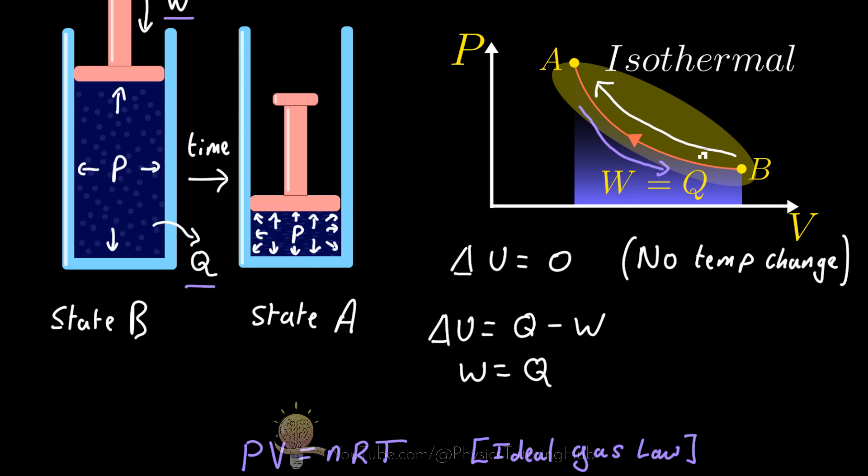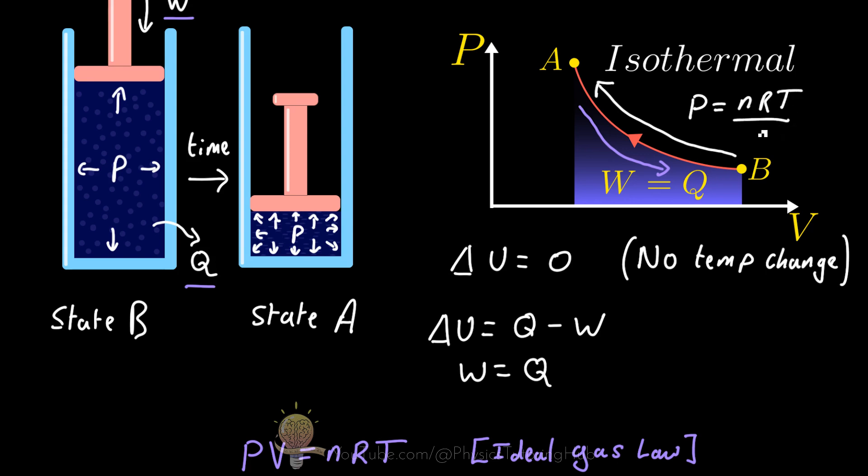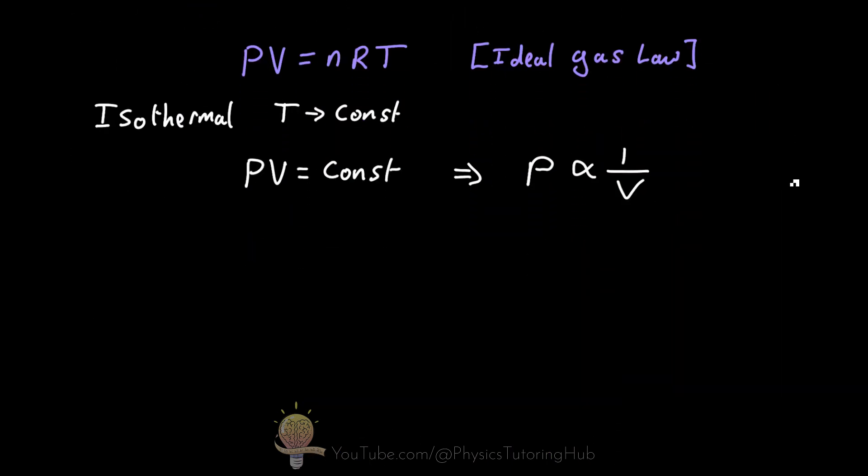So we can write the equation of this curve, where the pressure is equal to the number of moles of gas, the universal gas constant multiplied by the constant temperature divided by the volume. And this is equivalent to drawing a graph of y equals one over x. And if you've been introduced to calculus, you would know that it's fairly straightforward to integrate this type of equation or equations in the form of y equals one over x between two points on a curve.